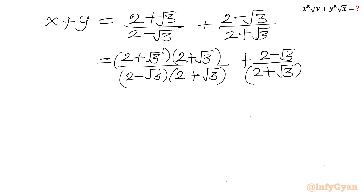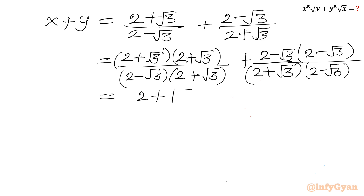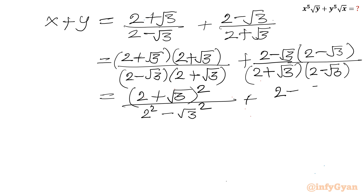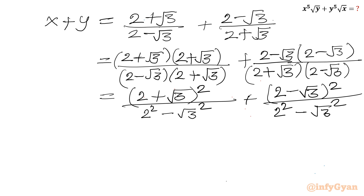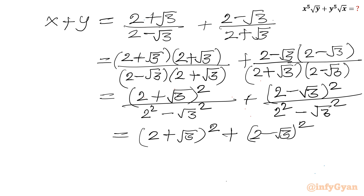So I will multiply numerator and denominator of the second term by 2 minus root 3. In the numerator of the first term it is 2 plus root 3 whole square, and in the denominator it is a plus b times a minus b, so we write 2 squared minus root 3 squared. For the second term similarly we write 2 minus root 3 whole square, and the denominator will be 2 squared minus root 3 squared. Now denominator is 4 minus 3, which is 1. So I will be writing 2 plus root 3 whole square plus 2 minus root 3 whole square.